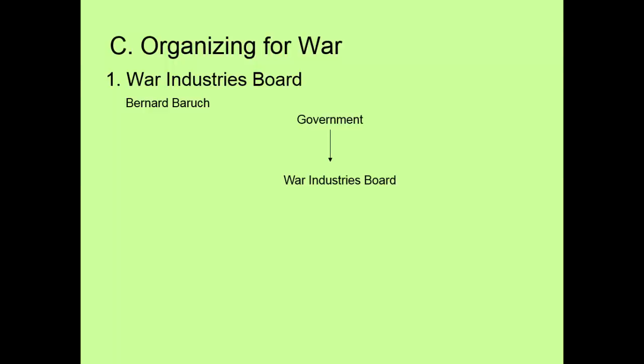The War Industry Board has been created. Before we get into the slide, let's talk about how the United States was a consumer economy — our factories were producing consumer goods: dresses, shirts, washing machines, those kinds of things. When the war starts for America, the government understands we have to stop producing consumer goods and start producing war materials: tanks, machine guns, uniforms for troops. To make this transition, Woodrow Wilson creates the War Industry Board.